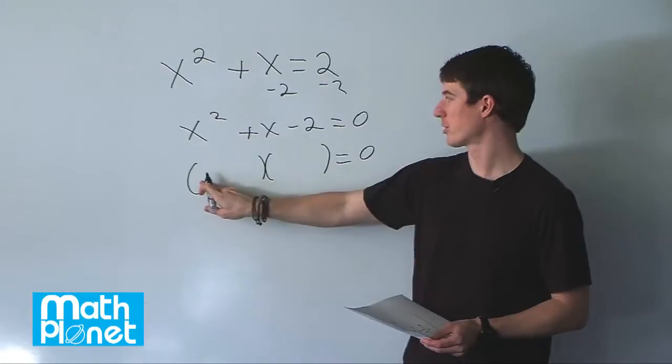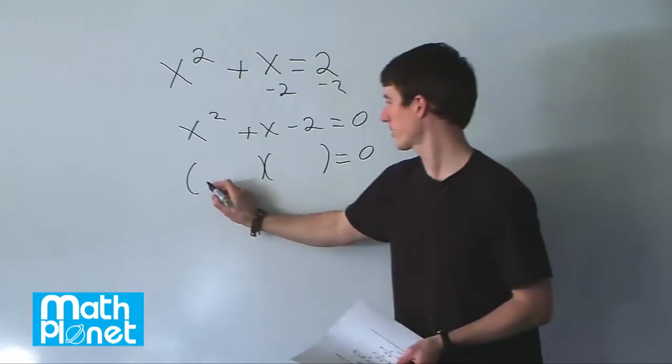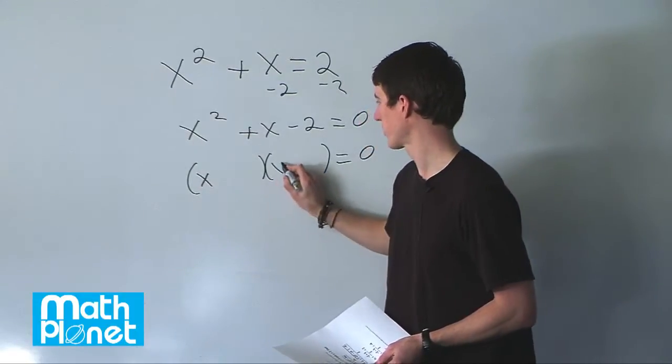The first term is going to be that which multiplied by itself gives us x squared, which is of course just x. x times x gives us x squared.